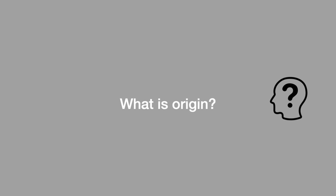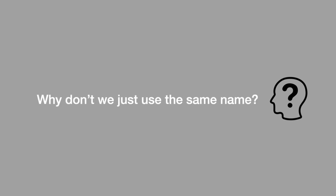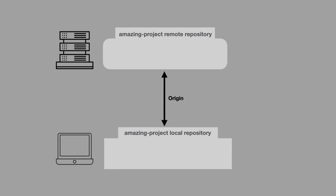So why don't we just use the same name? Let me answer that with an example. At the moment, we have our remote repository and our local repository, which are linked. But what if we had a friend that wanted to also work on the repository? Then that friend could possibly fork our remote repository. So let's go see that.